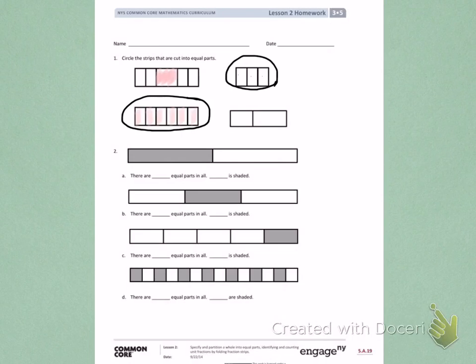Number 2. We're looking at the picture on Part A to tell how many parts there are in all. There are 1, 2 equal parts. One of those equal parts is shaded.